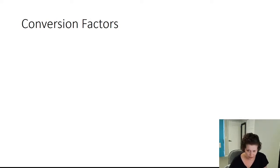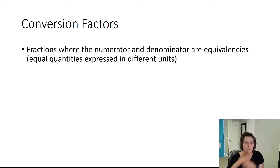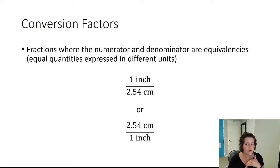Conversion factors are ways to utilize equivalencies. And what we do is put fractions where the numerator and the denominator are equivalencies—equal quantities expressed in different units. So one inch over 2.54 centimeters, that's that equivalency that I gave you in the last slide, or 2.54 centimeters over one inch. These conversion factors are how we represent and utilize equivalencies within doing dimensional analysis calculations.